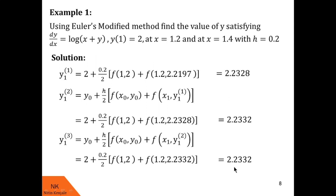y12 and y13 both equal 2.2332, matching up to four decimal places. So we stop the process of finding further better approximate values of y1 — we will not go for y14. Therefore, the value of y1 is 2.2332, correct up to four decimal places. This is the value of y at x = 1.2.